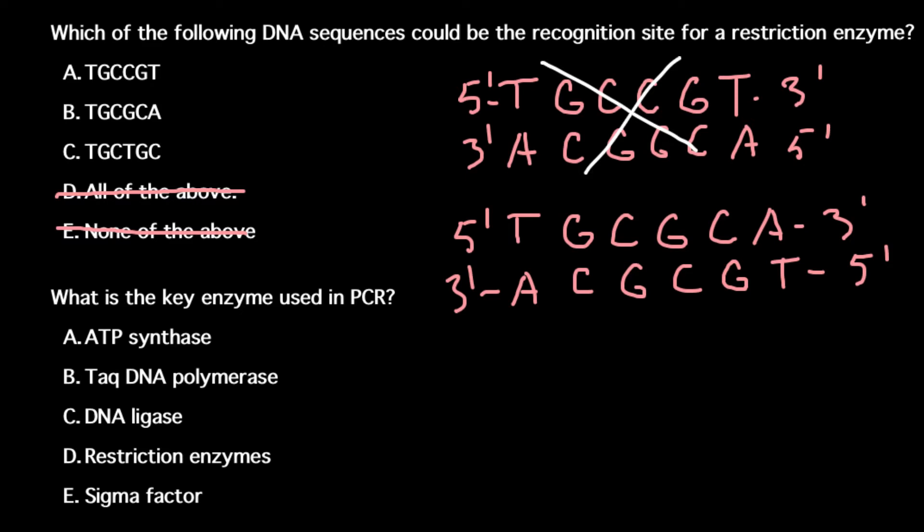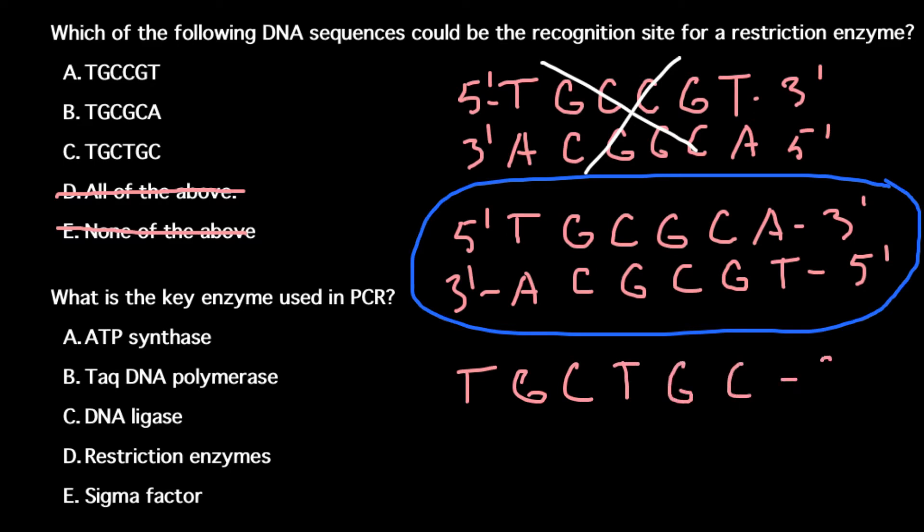Let's check this last variant: T-G-C-T-G-C. The other strand would be A-C-G-A-C-G. As you see, from 5 to 3 prime we read T-G-C and here we have G-C-A. This also cannot serve as a recognition site for restriction enzyme.